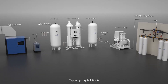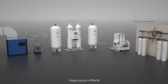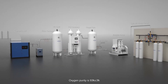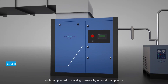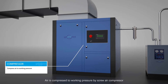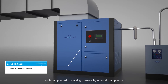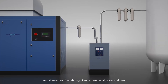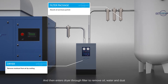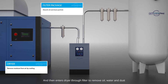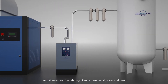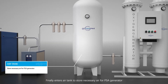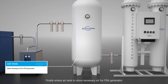Oxygen purity is 93% plus or minus 3%. Air is compressed to working pressure by a screw air compressor, then enters the dryer through a filter to remove oil, water, and dust. Finally, it enters an air tank to store the necessary air for the PSA generator.